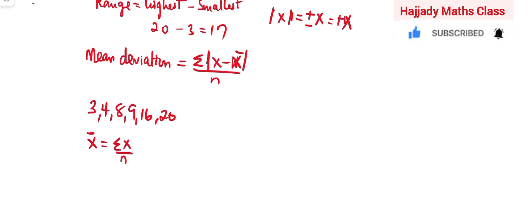That means all this observation must be added together. So we are going to have 3 plus 4, plus 8, plus 9, plus 16, plus 20. Everything over our observation: 1, 2, 3, 4, 5, 6. We have 6 altogether.